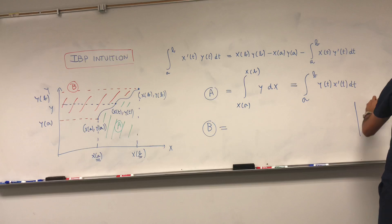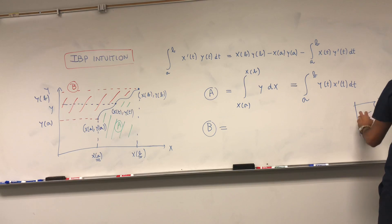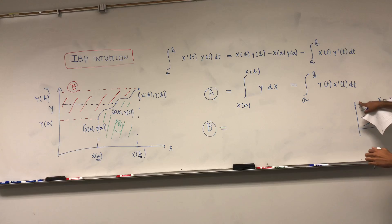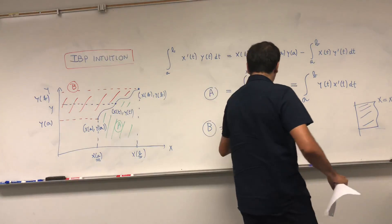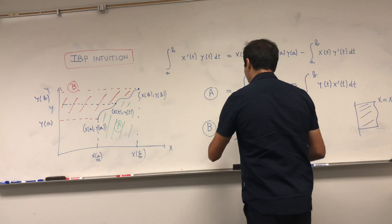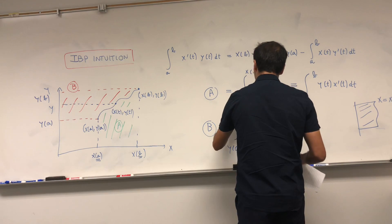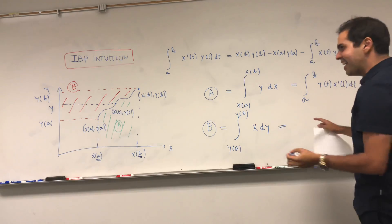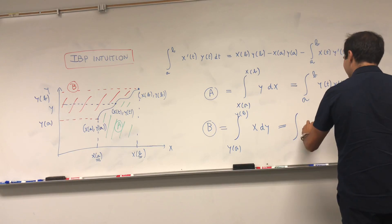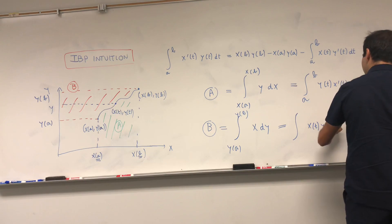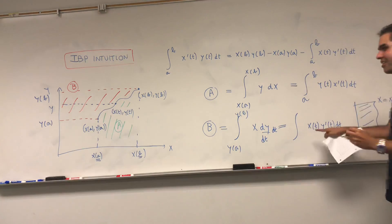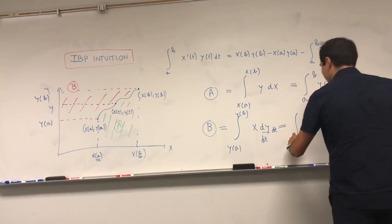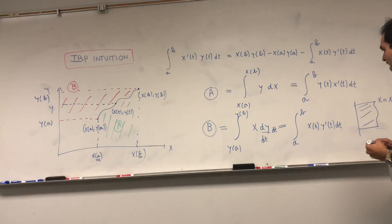If x is a function of y, the integral becomes the integral of x dy from y of a to y of b. Using the parametric equations trick, this becomes the integral from a to b of x of t times y prime of t dt, since dy is dy/dt times dt.